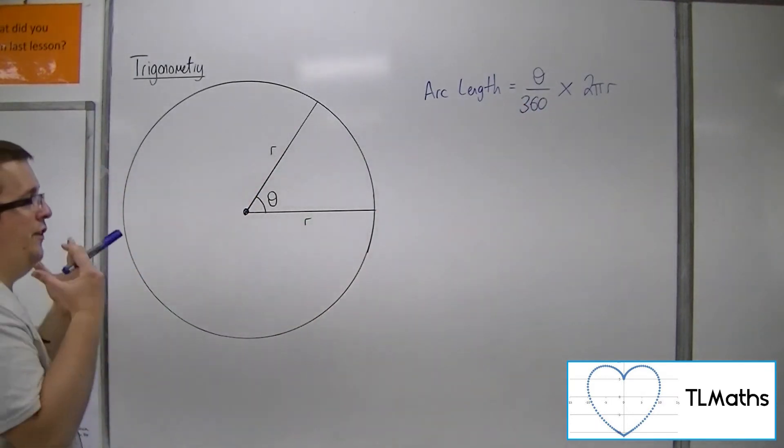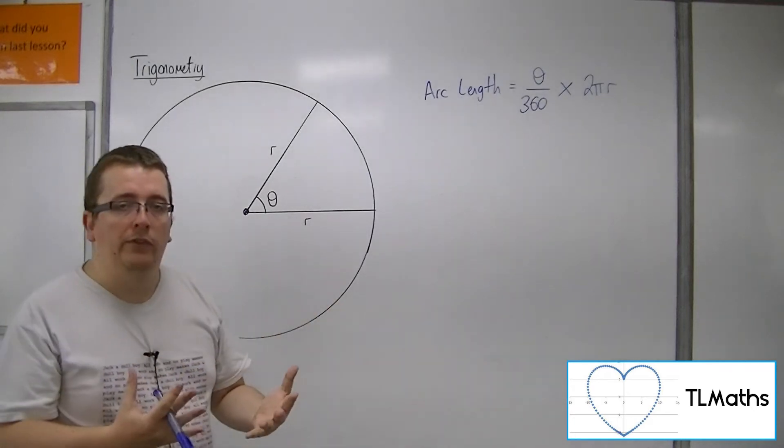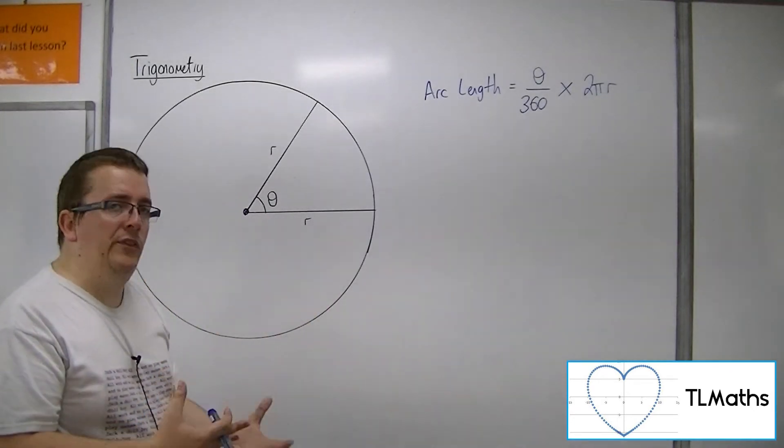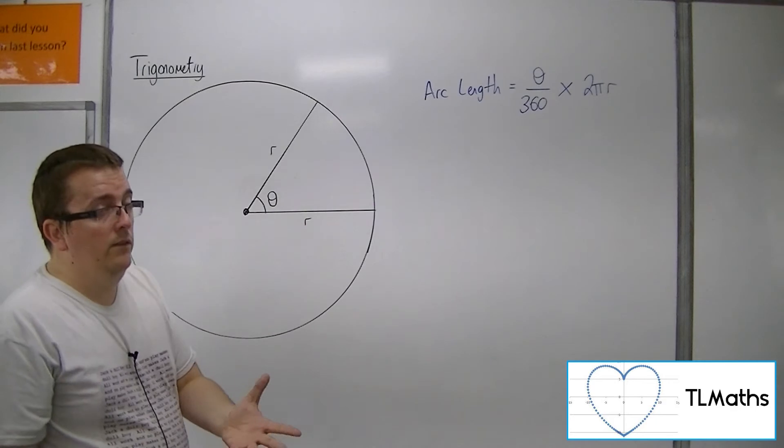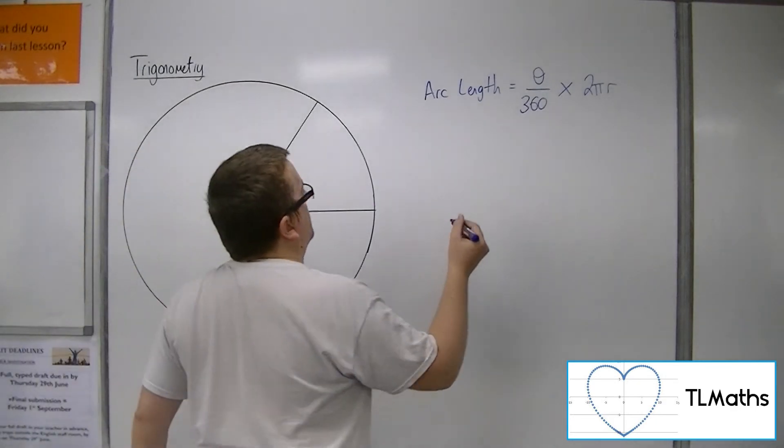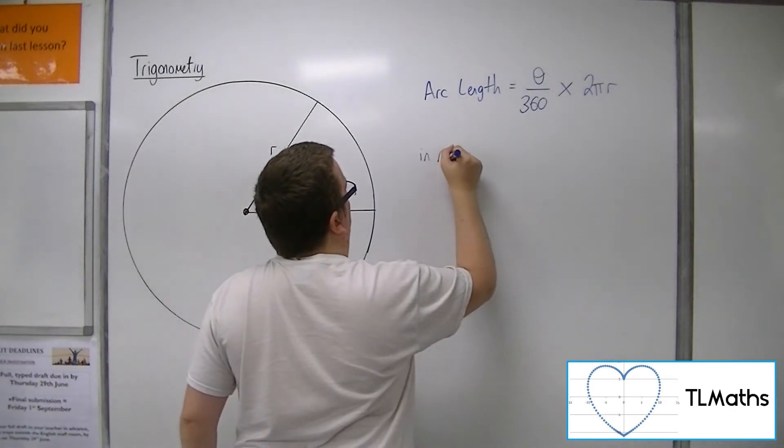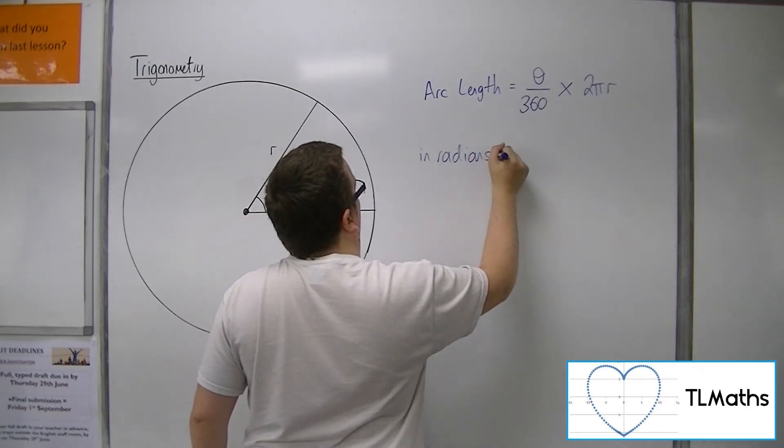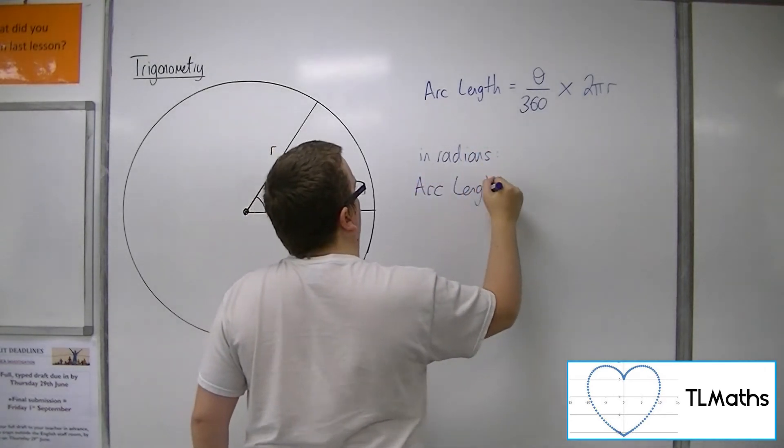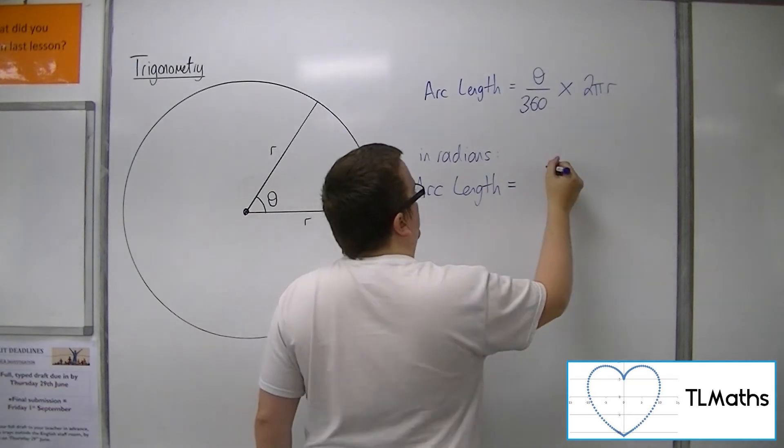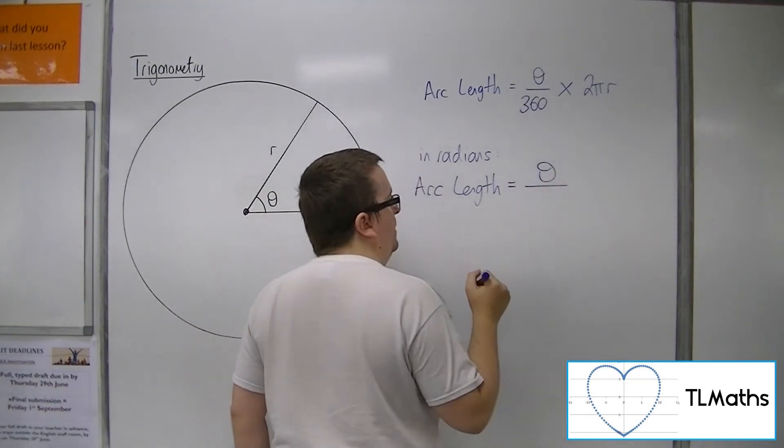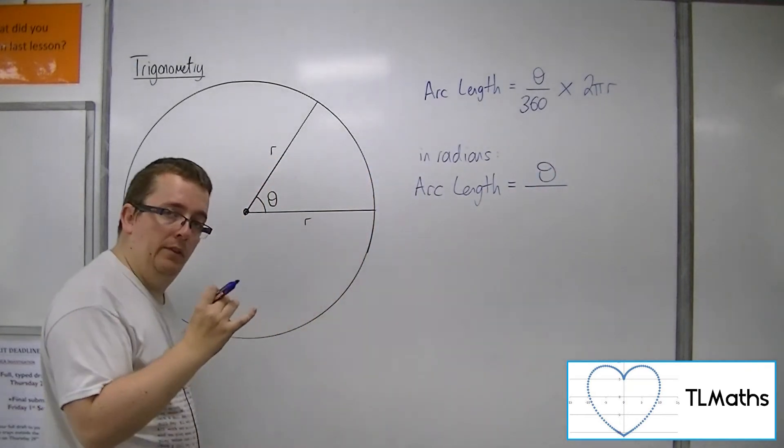Now, because I know that in radians, 360 degrees is 2π radians. So in radians, the arc length can be given by the angle that you've been given in radians, divided by 2π rather than 360 times by the 2πr.